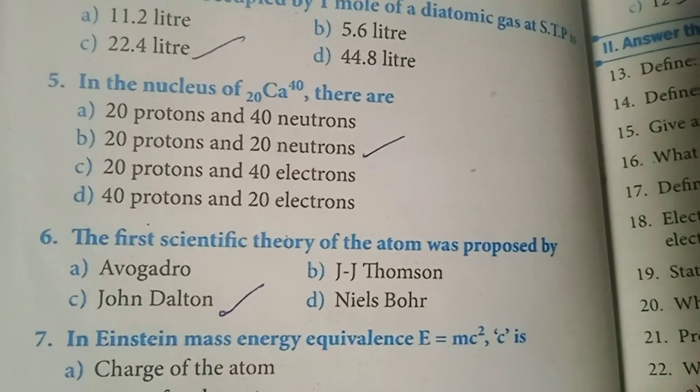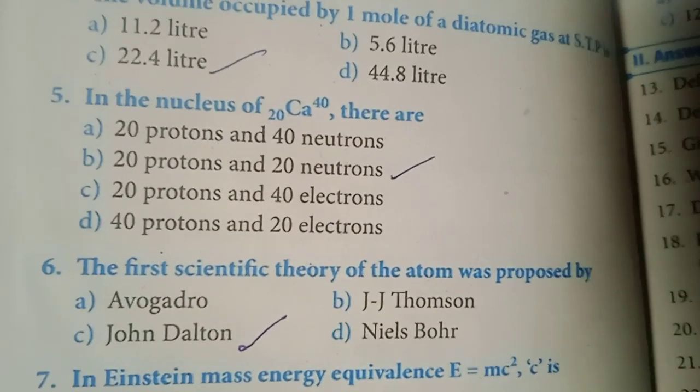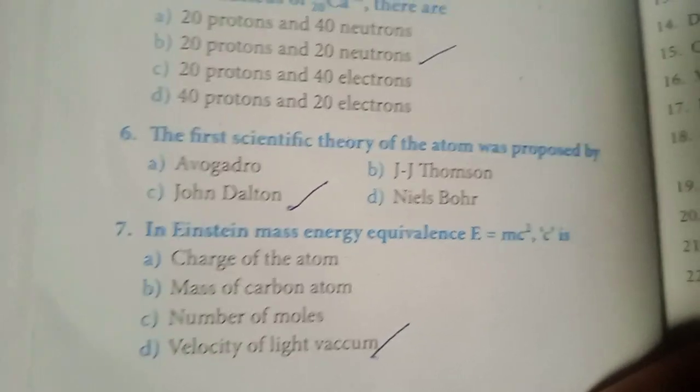Sixth one. The first scientific theory of the atom was proposed by John Dalton. Option C is the answer. Seventh one.